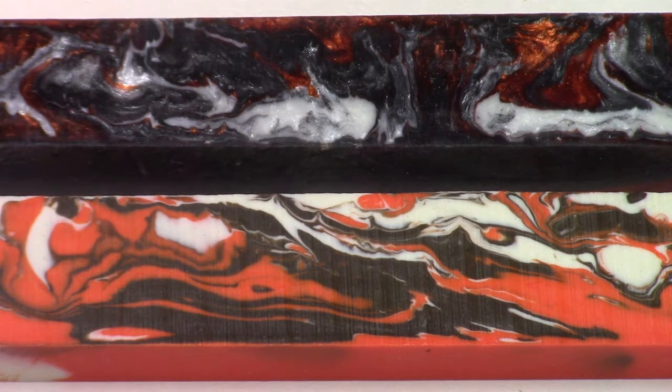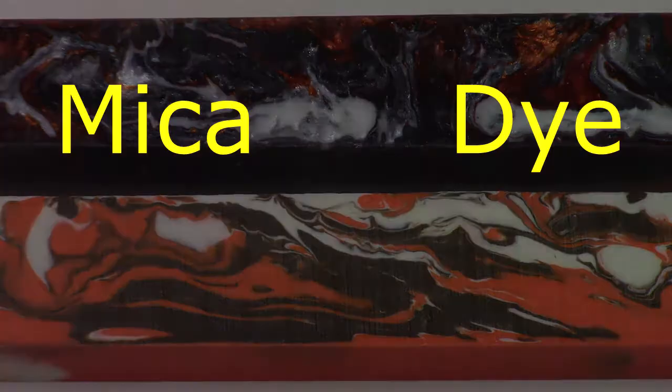Now the bottom blank is made with dye. That's more of a solid color so you don't get the depth but you can get some really nice color separation, some very vibrant and bright colors.